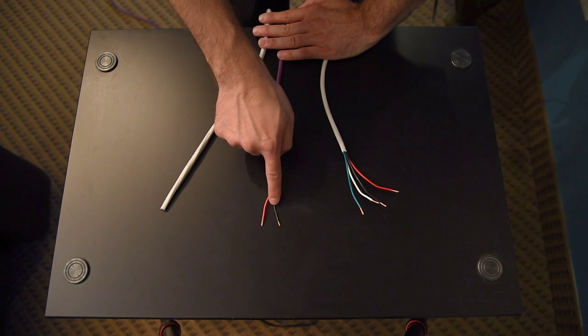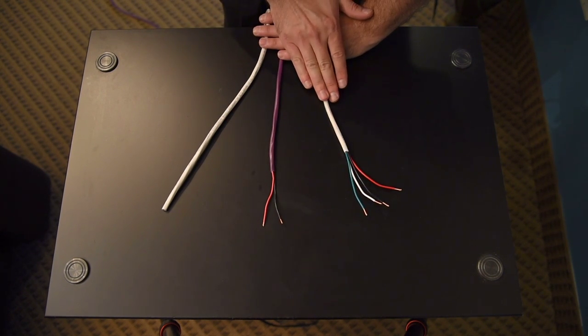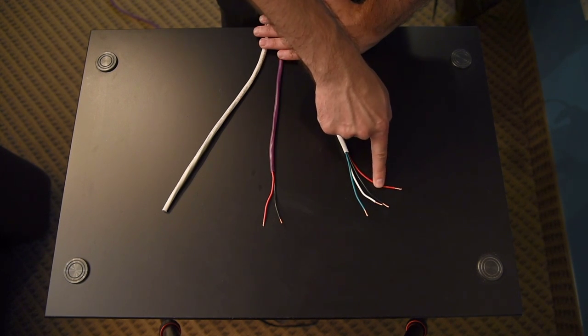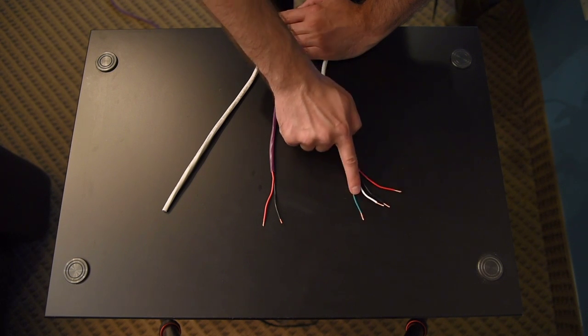That just means how many ends are on the cable. And on a four conductor cable, you have a red jacketed cable, a black jacketed cable, a white, and a green.